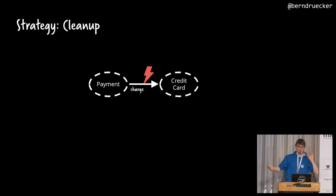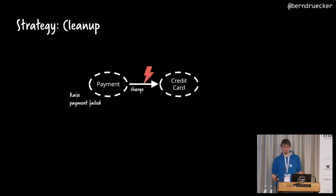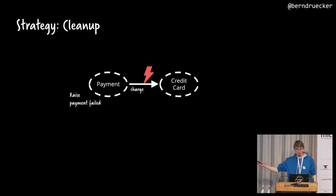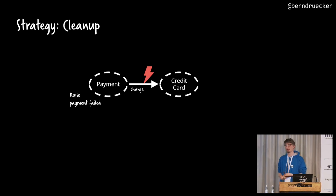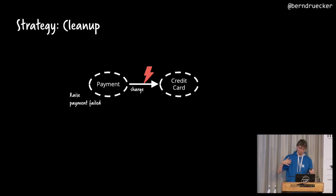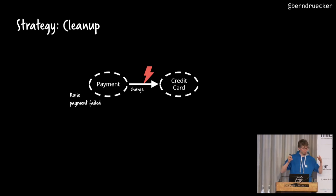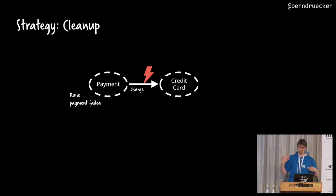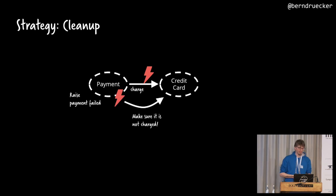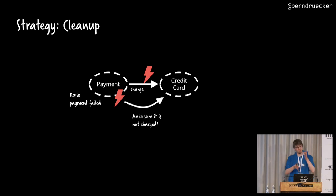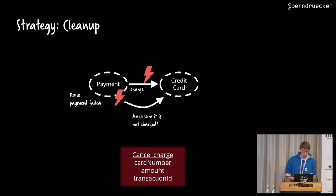For example, if I want to charge the credit card and at some point I give up, I probably have charged the credit card technically. I have to think about that — especially in payment, ignorance is not the best strategy. There are use cases where just ignoring it is a good strategy, but make a conscious decision. A lot of developers just don't realize they have to think about that. In this case, I probably have to make sure it's not charged — either by checking if it was charged, issuing a refund, or issuing a cancellation. It depends on the interface, but I have to think about that.